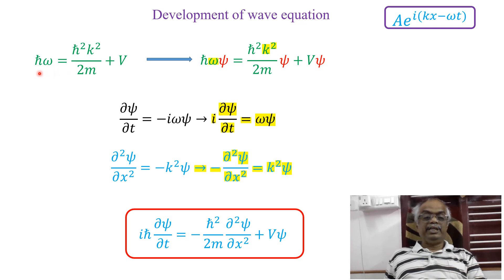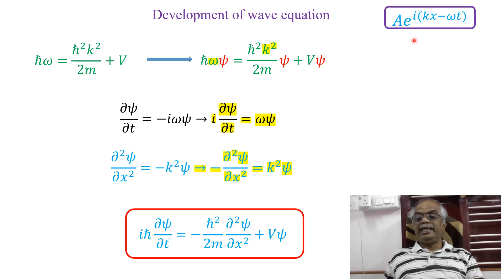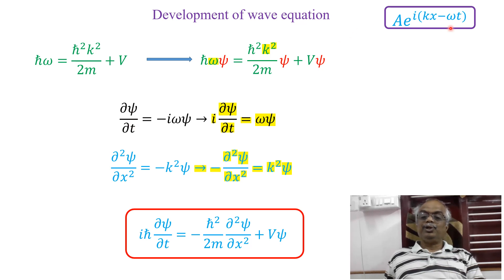Just now we arrived at this expression based on the de Broglie hypothesis and Einstein's postulates: h-cross omega is equal to h-cross squared k squared over 2m plus V. Now, multiply both the right-hand side and left-hand side by the wave function psi. Take the general expression for the wave function: A e^(i(kx − ωt)). If you differentiate this — first-order time derivative — you will get minus i omega psi.